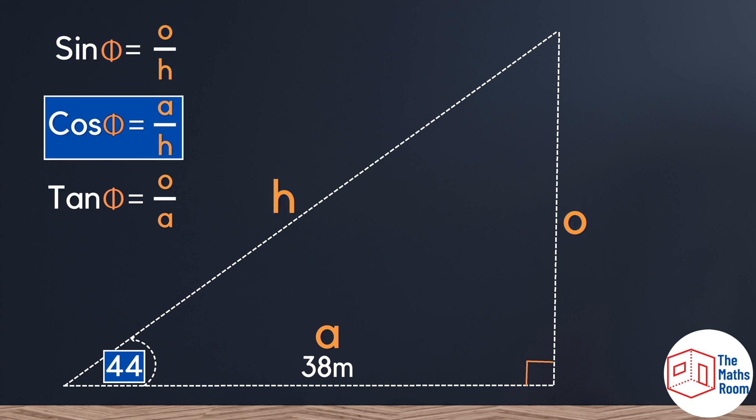Looking at cos and going through the same process, we've been given the 44 degrees. We've got the adjacent side, and once again we don't have or are not interested in finding out the hypotenuse. If we were we would use the cos rule.